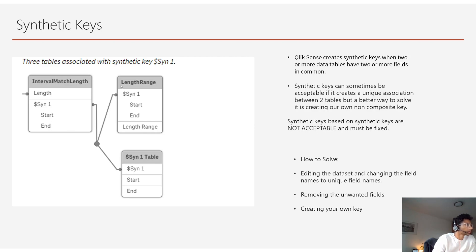If you have two or more data tables with two or more fields in common, Qlik creates a synthetic key. Is this acceptable? In some cases, yes — if you need the combination of two fields like start and end to create a good association between two tables, then the synthetic table is actually acceptable. But there's a better way, so for the most part, do not use synthetic tables.